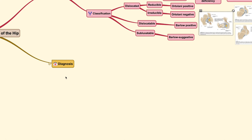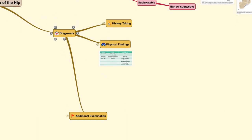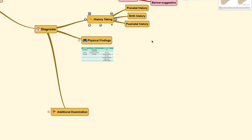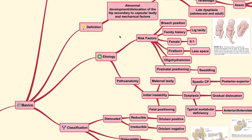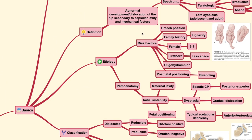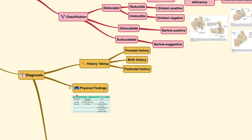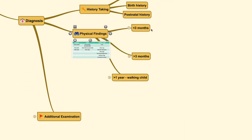DDH can present at several stages of life — when the baby is just born, several months after birth, or in neglected cases at a late stage when the baby is already walking. For history taking, you need a complete history from prenatal to postnatal, including questioning all the risk factors discussed earlier. Physical findings differ according to the age at which the patient is found.